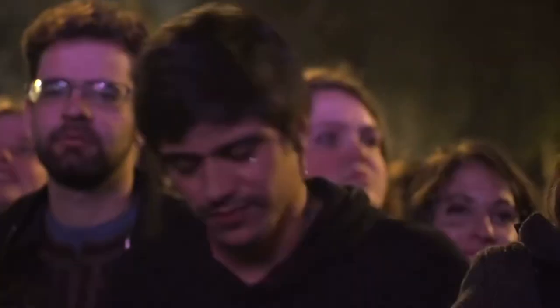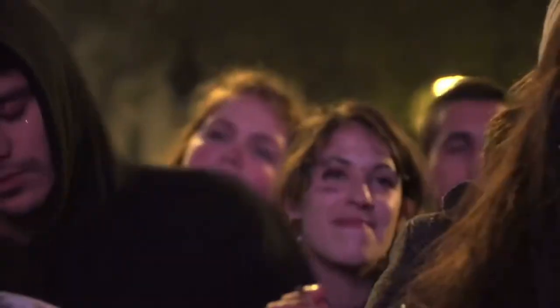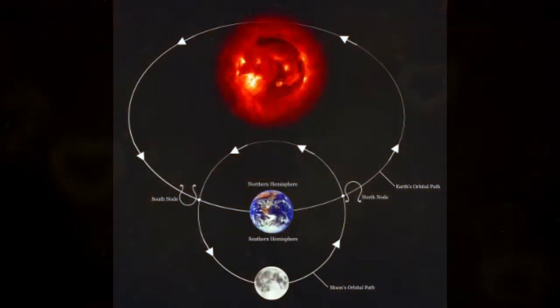In respect to the nodes of the moon, we look to these to be most telling of the life path, as it represents the emotional body of our soul, represented by the moon, in relation to our very essence, which is the sun. And the point on the ecliptic of the earth around the sun, where the moon travels to the southern hemisphere as it orbits the earth,